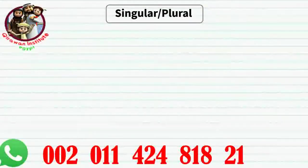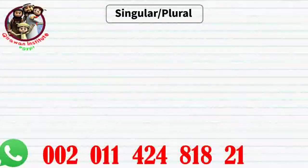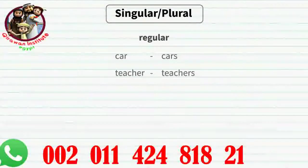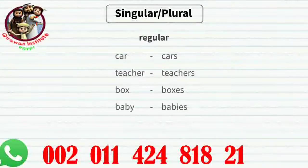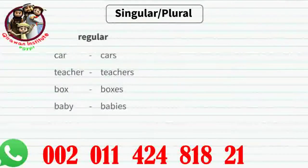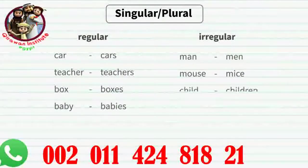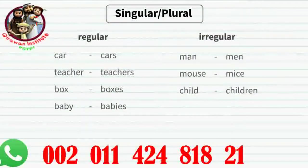Singular and plural. In English, some nouns can be made plural by adding -s, -es, or -ies — for example, car/cars, teacher/teachers, box/boxes, baby/babies. These are regular, or in Arabic 'sound,' nouns that follow a pattern. There are also irregular nouns like man/men, mouse/mice, child/children. In Arabic, there are also sound or regular plurals and broken or irregular plurals.